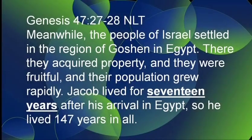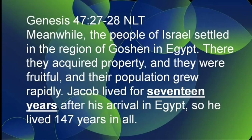Meanwhile, the people of Israel settled in the region of Goshen in Egypt. There they acquired property, and they were fruitful, and their population grew rapidly. Jacob lived for 17 years after his arrival in Egypt, so he lived 147 years in all.